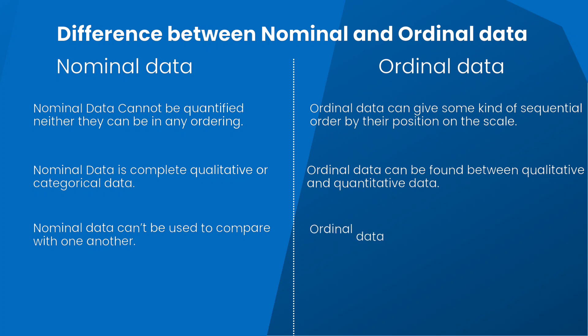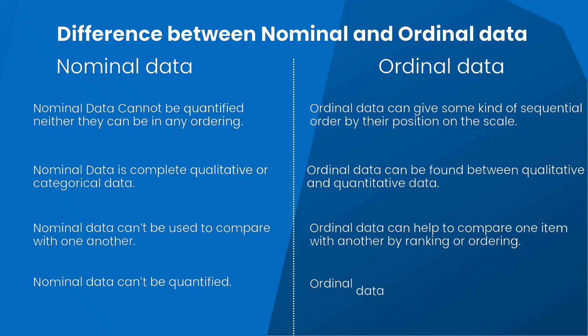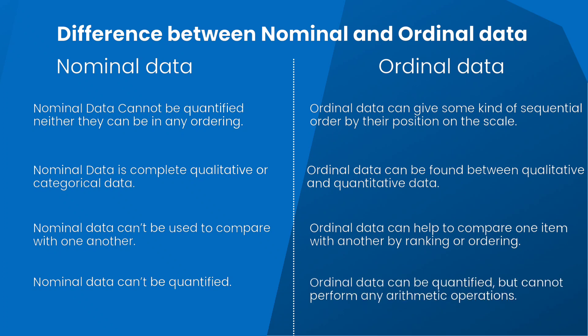Ordinal data can help compare one item with another by ranking or ordering. Nominal data cannot be quantified, whereas ordinal data can be quantified but cannot perform any arithmetic operations.